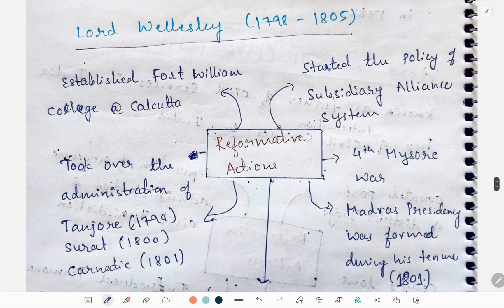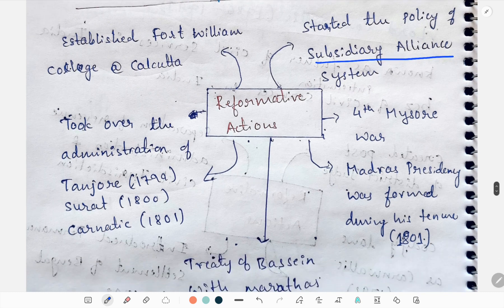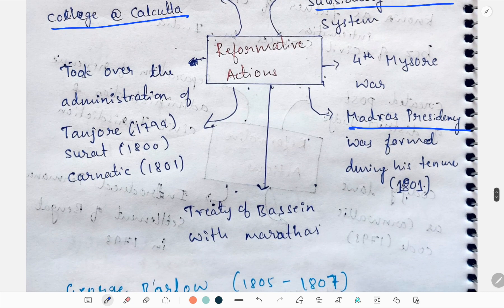Next we'll study about Lord Wellesley. His reformative actions are he started the policy of subsidiary alliance system. The Madras Presidency was formed during his tenure. He established Fort William College at Calcutta. He also took over the administration of Tanjore, Surat, and Carnatic, and signed the Treaty of Bassein with the Marathas. The Fourth Mysore War also happened during his tenure.